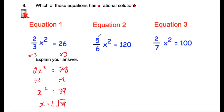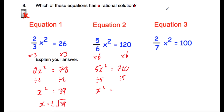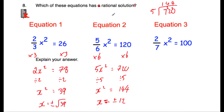Now equation two. I'd multiply both sides by six: five sixths times six is five, so five x squared equals 720. Dividing by five, x squared equals 144 — because 720 divided by five is 144. Since 12 squared is 144, x equals plus or minus 12. Those are both rational solutions. So equation two does have rational solutions.